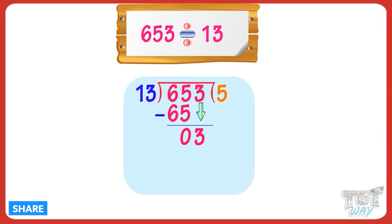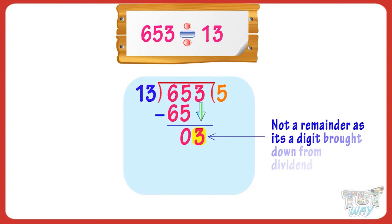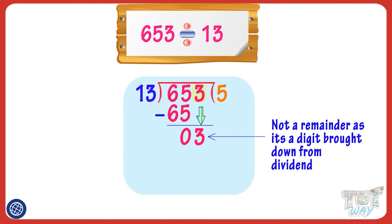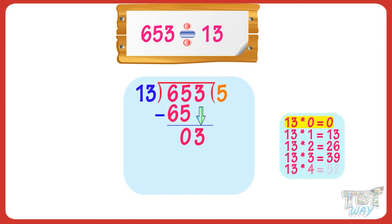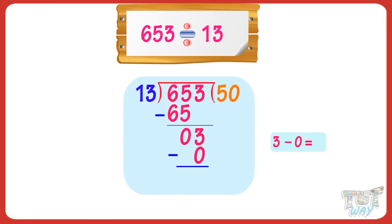Here is something we need to understand. We are left with 3, which is less than the divisor, but it's a digit from the dividend which is yet to be divided. So, it's not a remainder — we have to divide it with 13. What we do is, we find a multiple of 13 which is less than 3. That is, 13 multiplied by 0 equals 0. So, write 0 in the quotient and 0 below 3. Now, our quotient is 50 and remainder is 3.